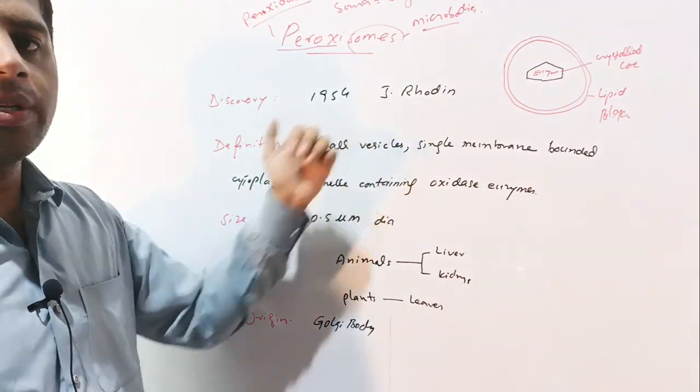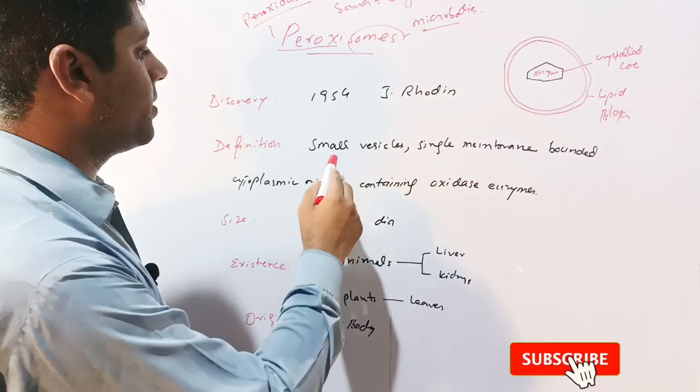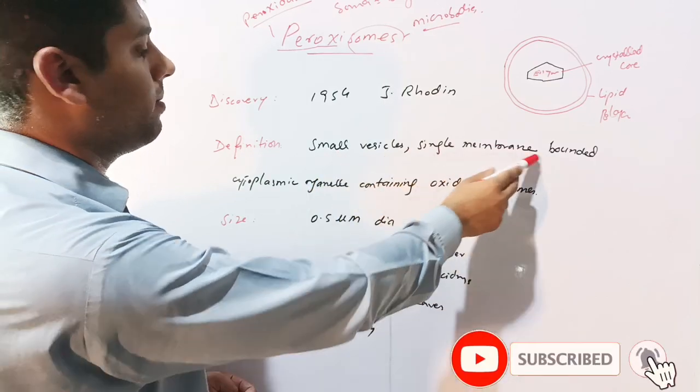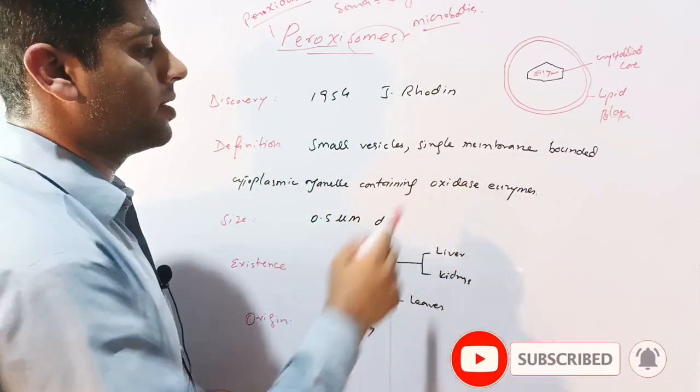These were discovered in 1954 by J. Rodin. Peroxisomes may be defined as small vesicles, single membrane-bounded cytoplasmic organelles containing oxidase enzymes.